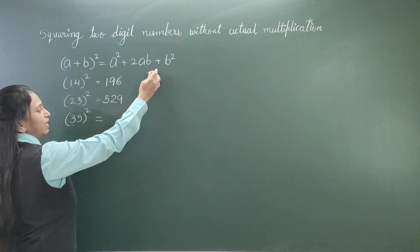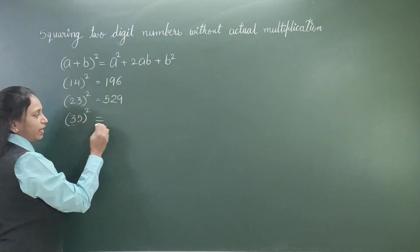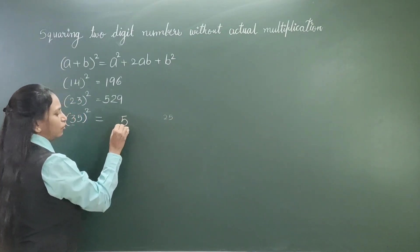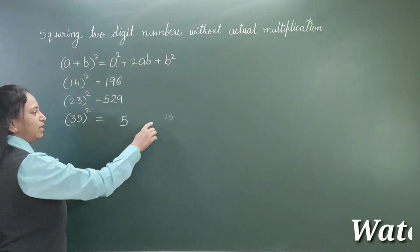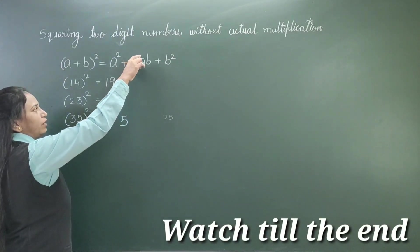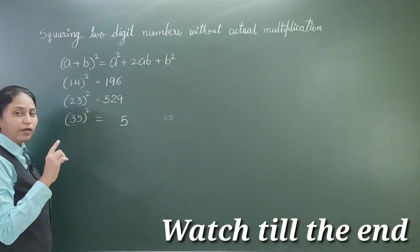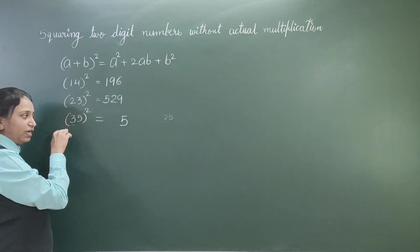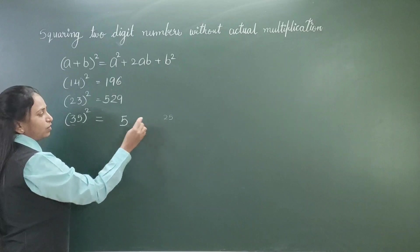So again, we will start from the right side. Square of 5 is 25. So, we will use the unit digit over here. That is 5. And this 2 will carry forward to the middle term, 2ab. That is 3 × 5 = 15, × 2 = 30. 30 + this carry 2 = 32.